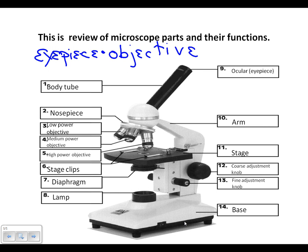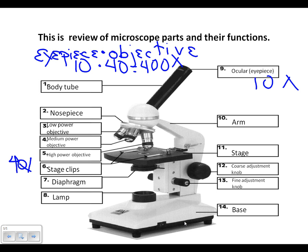So if you want to figure out the total magnification for high power objective, you know that the eyepiece is ten times and the high power objective is forty times. So you would do ten times forty, which would equal a total magnification of four hundred times.